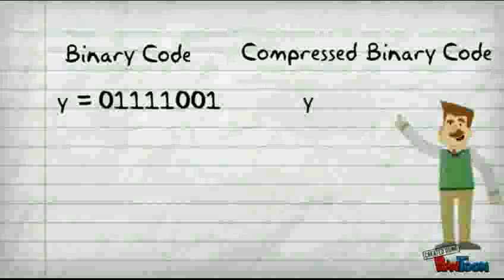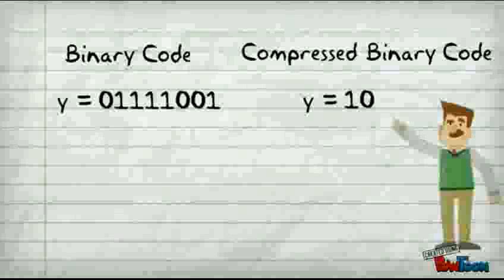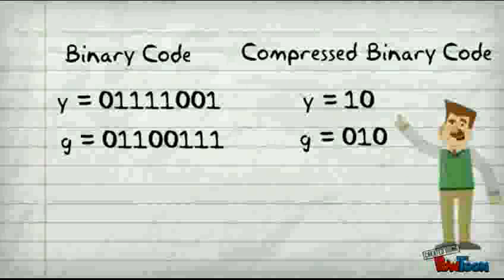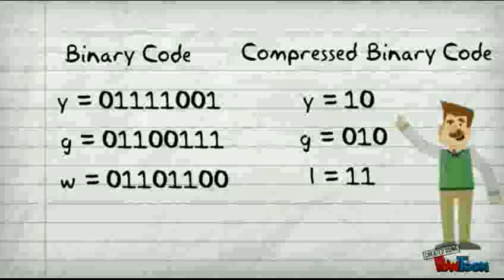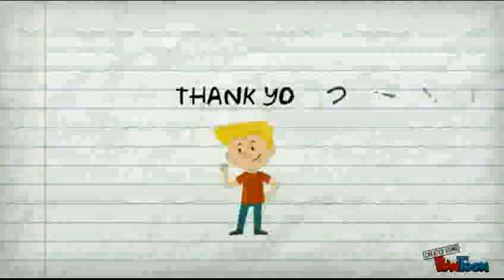Binary code. Y equal to 0 1 1 1 1 0 0 1 and its compressed binary code is Y equal to 1 0. So similarly we obtain for rest of the probabilities that is the compressed code.